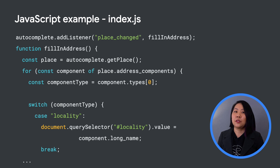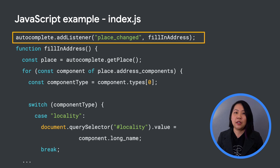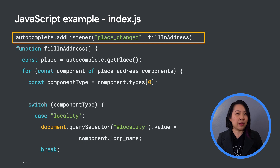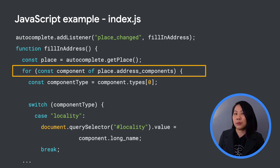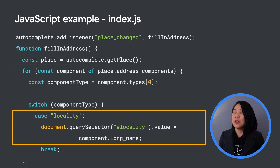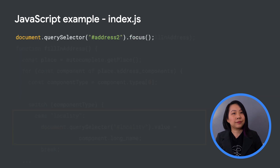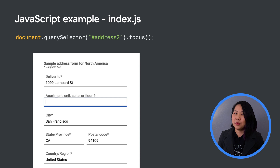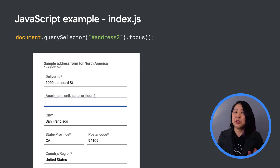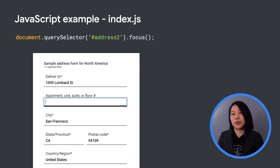In your code, add a listener for the place_changed event so you can define what happens when the user selects their address from the Place Autocomplete bar. In the response, you'll want to look for the address components field that you requested. Match the address components to the corresponding fields in your address form. Some autocompleted addresses have unit, apartment, or floor numbers, but most don't, so you'll want to move focus to the Address Line 2 field to encourage the user to fill in any further address details.